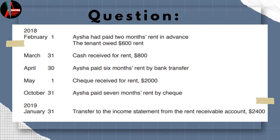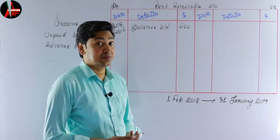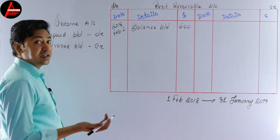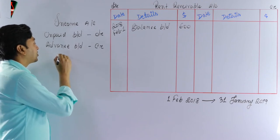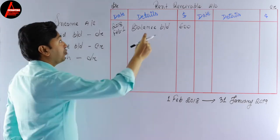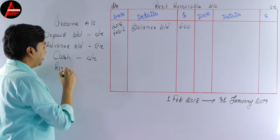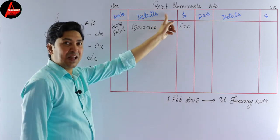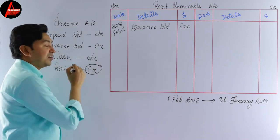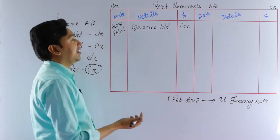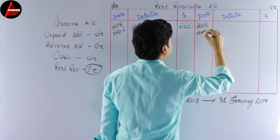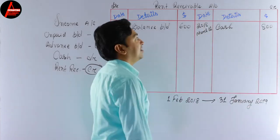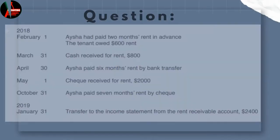The next transaction is 31st March — cash received for rent $800. Cash received from the tenant. The double entry is: debit cash, credit rent receivable account. Since we are doing the rent receivable account, we record it on the credit side. We write: 2018, March 31st — cash — $800.